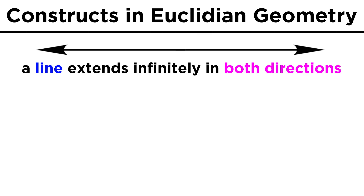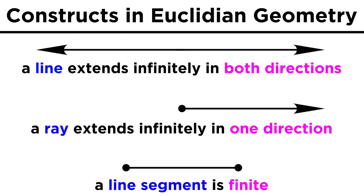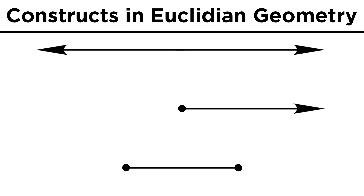Just to list a bit more terminology: while a line extends infinitely along its one dimension in both directions, if we chop one end off, giving it a definite starting point, we call this a ray. If we chop off both ends, leaving some chunk left over in the middle, this is called a line segment. Line segments have two endpoints, rays have one endpoint, and lines have none. We can use lines, rays, and line segments to generate all kinds of figures.